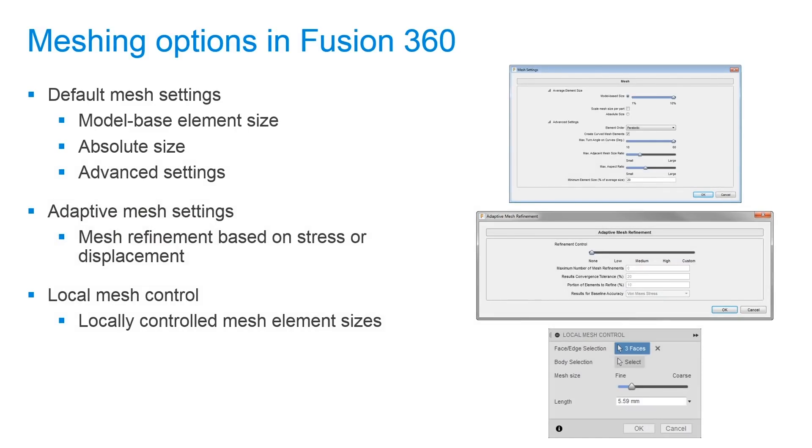Let's take a look at what our options are in Fusion 360 to define these mesh elements. The default settings are set to model-based element size. This means that it will increase or decrease the mesh element size based on the geometry. We can also dictate an absolute size for our mesh or use some of our advanced settings.